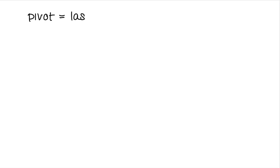Now let's write this in pseudocode. First, set the pivot to the last element. For the Lomuto partitioning scheme we need two pointers: one pointer is used to find the element that is smaller than the pivot, and the other is used to keep track of the element that is larger than the pivot. The first pointer will be incremented each iteration.